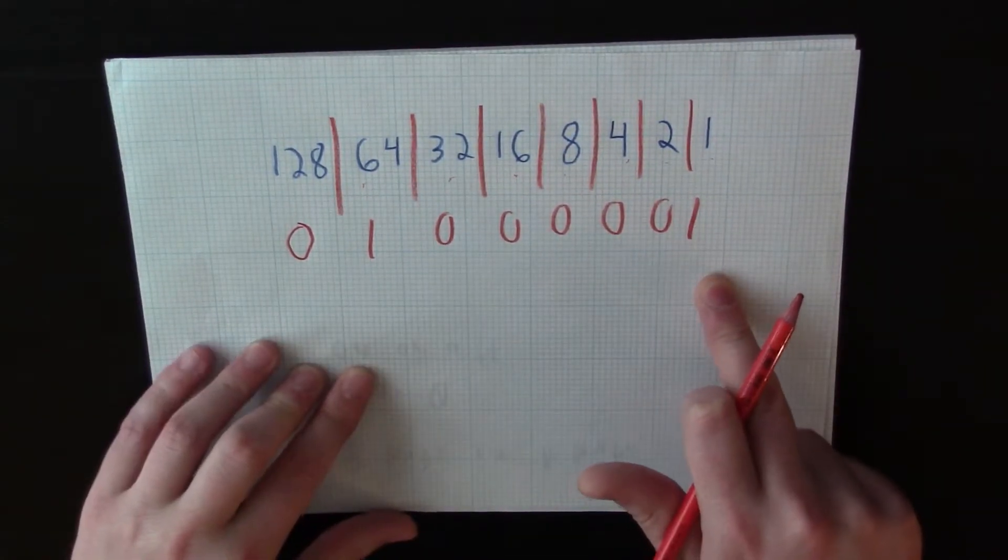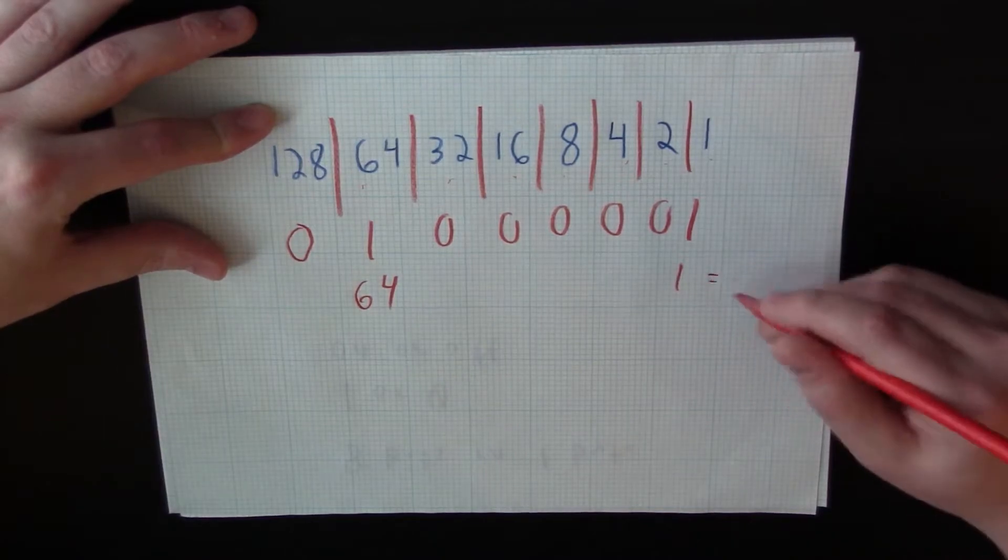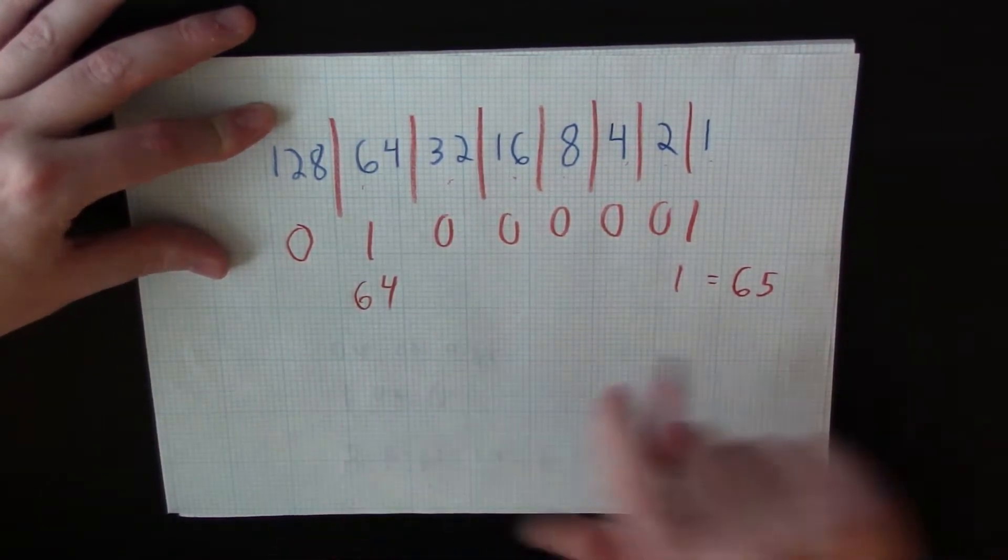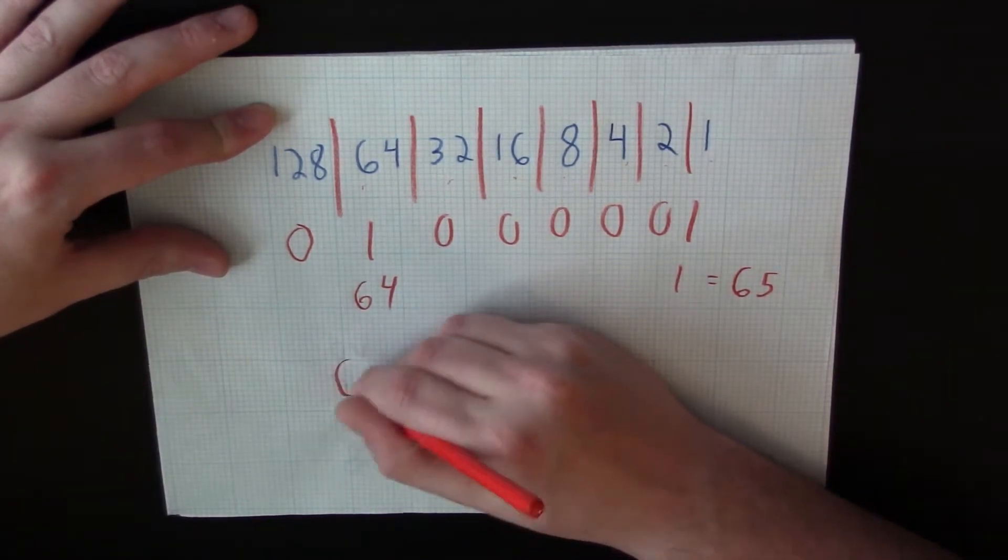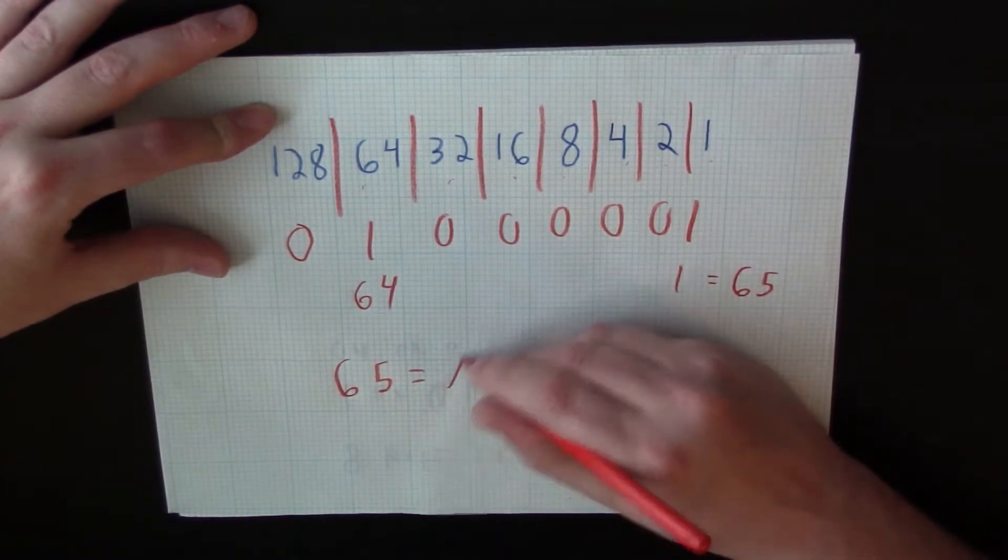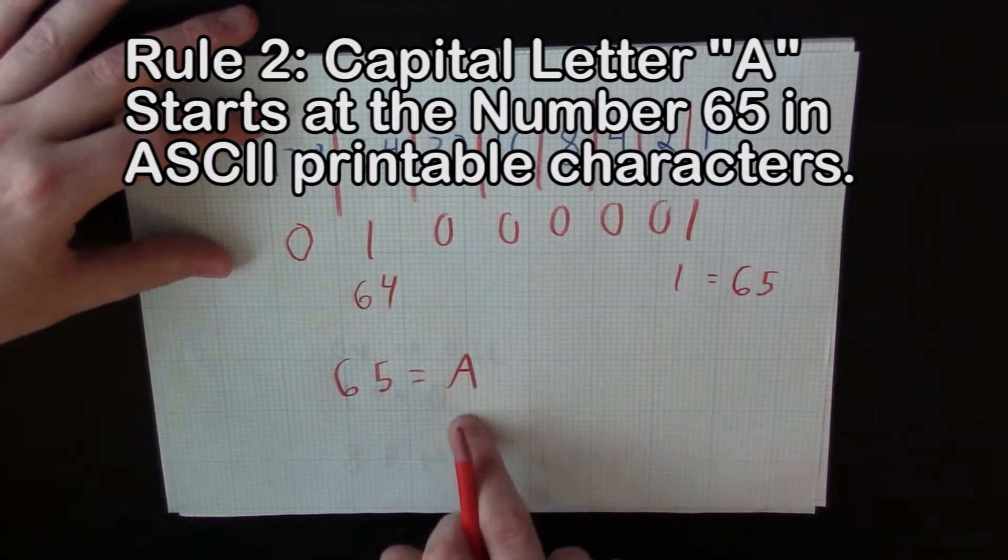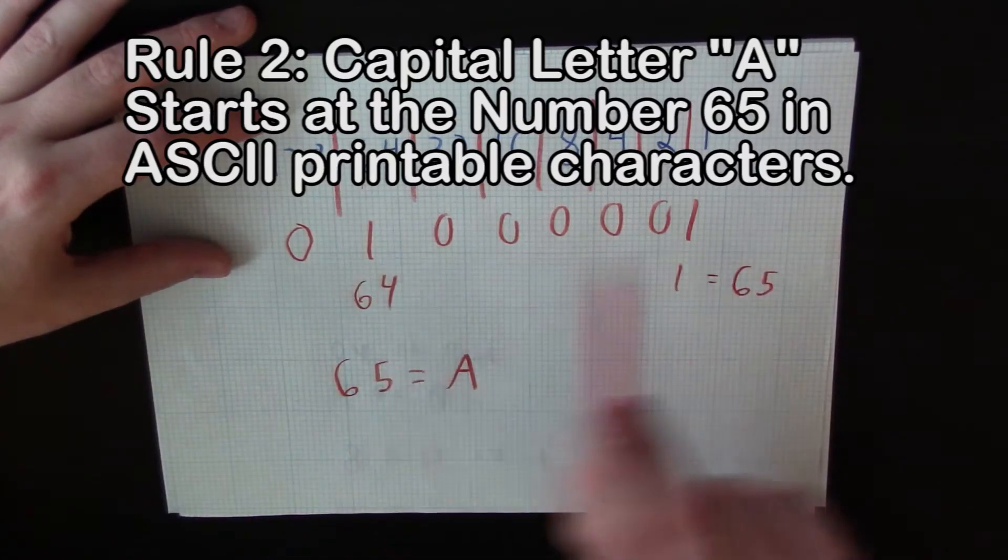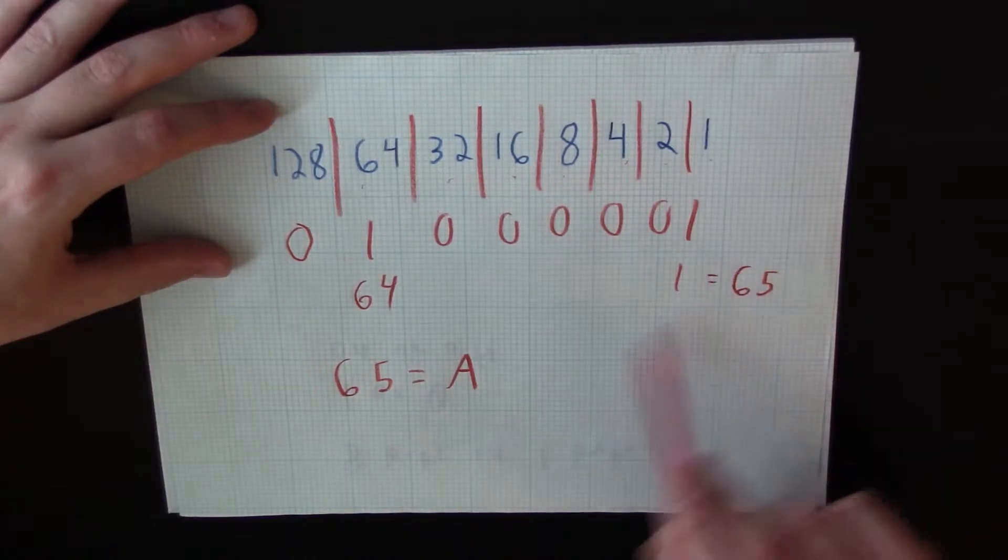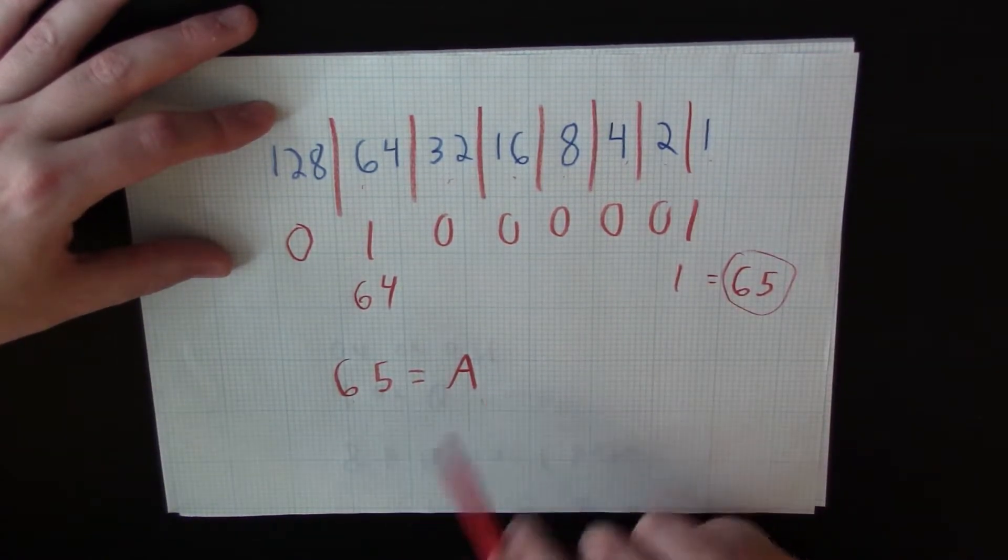Now I did that for a particular reason. We have 64 and we have a one, which equals 65 when added. Now the interesting thing about 65 is 65 equals capital letter A in ASCII printable characters. So that is the second rule we need to remember: to add the ones, and that will give you a number. And I'm going to explain why that is in just a moment here. And that 65 equals A.